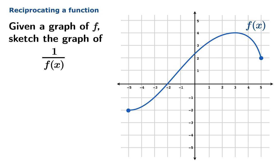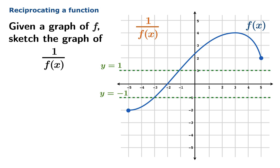Let's apply this principle to the following problem. We have a sketch of a graph of a function f, and we wish to sketch the graph of its reciprocal 1 over f. One of the first things you should probably do in such a problem is identify the lines y equals 1 and y equals negative 1. Wherever the graph of f intersects these, this gives you a point where the graph of 1 over f also goes, because the reciprocal of 1 is 1 and the reciprocal of negative 1 is negative 1.